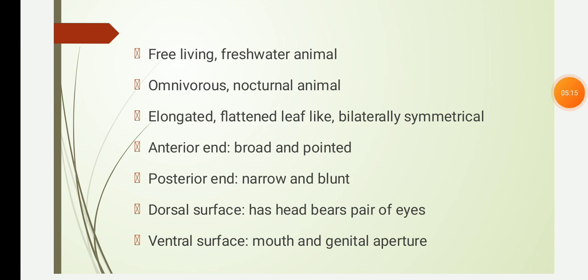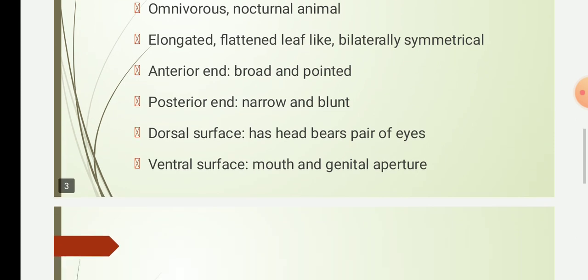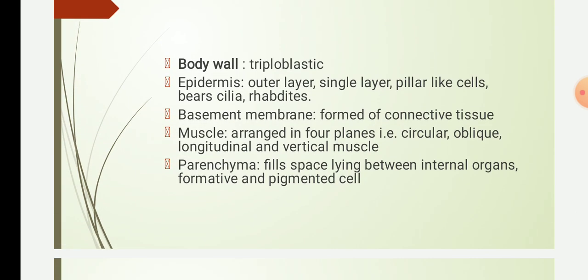There are numerous minute openings on the surface of the body called excretory pores, and the anus is absent. The body wall of Planaria is triploblastic, having three layers: outer epidermis, inner endoderm, and a mesoderm layer in between.